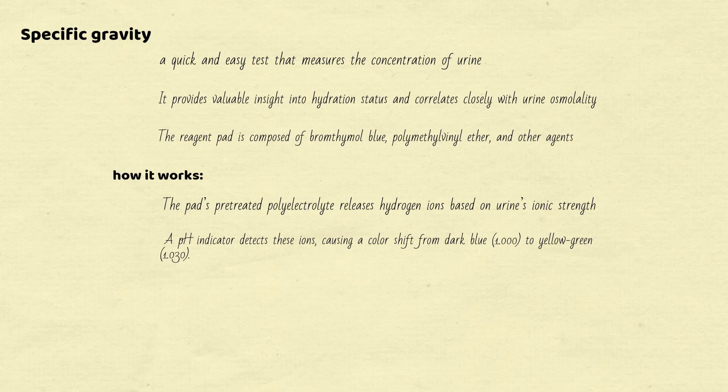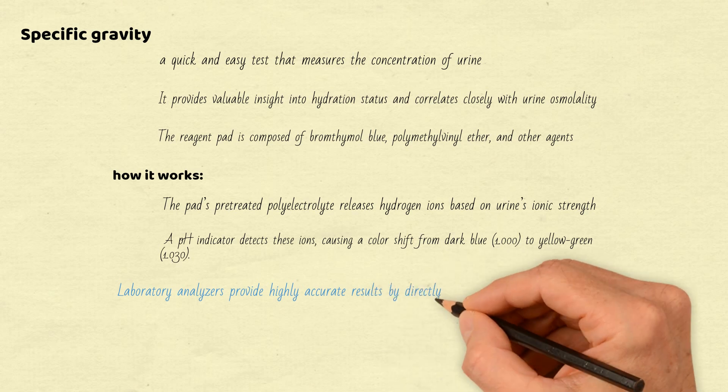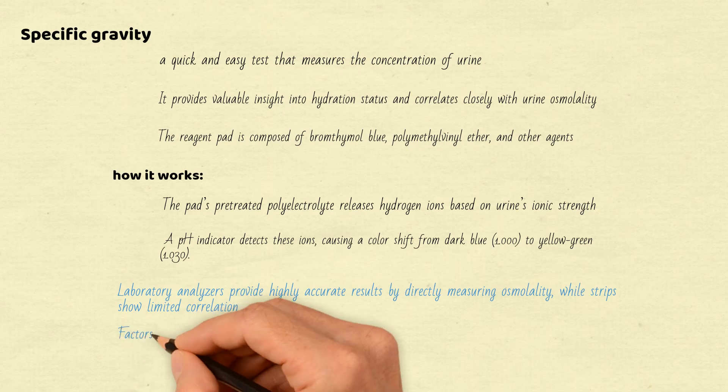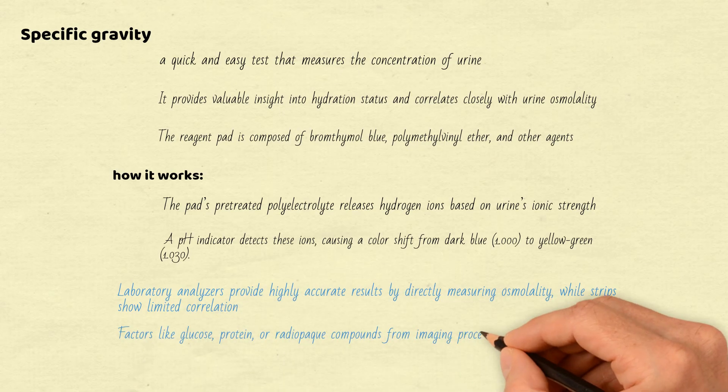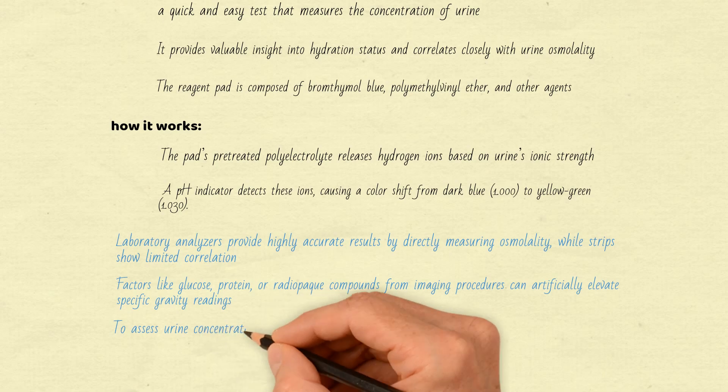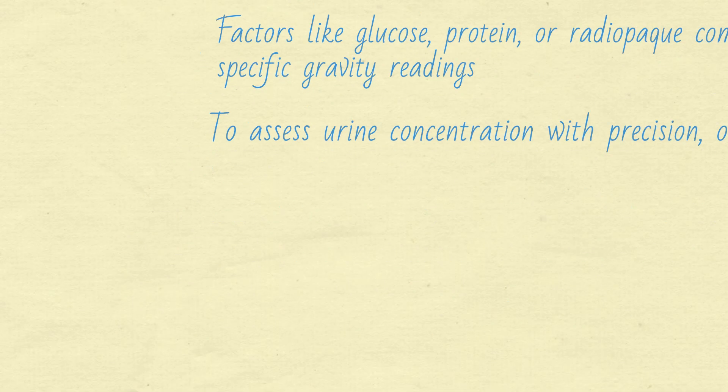While reagent strips are convenient, they have their challenges. Laboratory analyzers provide highly accurate results by directly measuring osmolality, while strips show limited correlation. Factors like glucose, protein, or radiopaque compounds from imaging procedures can artificially elevate specific gravity readings. To assess urine concentration with precision, osmolality measurement is preferred over specific gravity.